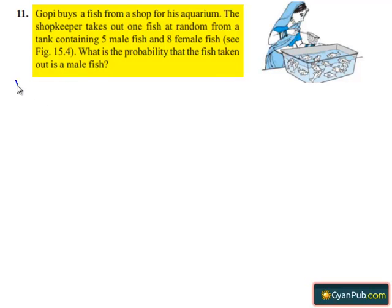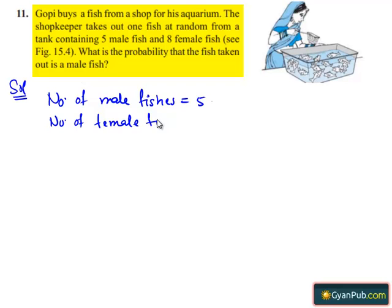Moving on to the solution. Let us first write the given data. Number of male fishes in the tank equals 5. Number of female fishes in the tank equals 8. Total number of fishes in the tank equals 5 plus 8 which is 13.